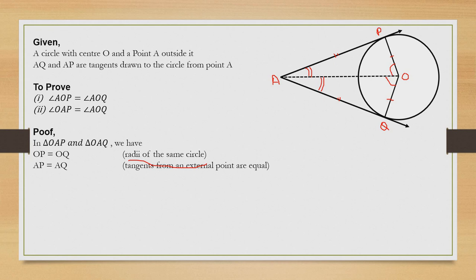Next, AO is equal to AO, which is the common side shared by both triangles. Therefore, triangle OAP and triangle OAQ are congruent to each other under the SSS congruence criterion.